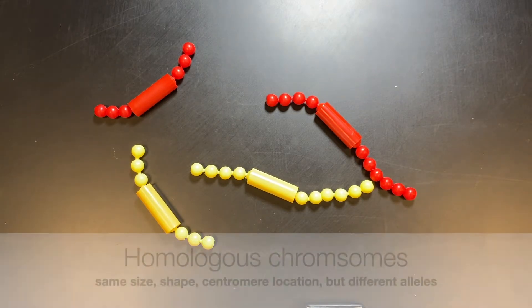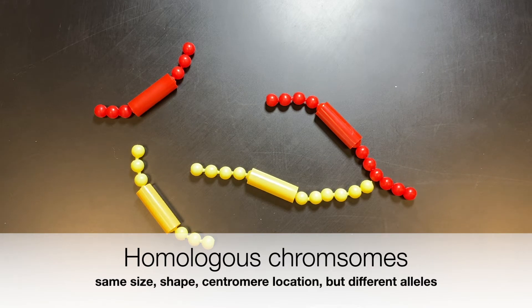I want to talk to you about the idea of homologous chromosomes. Homologous chromosomes are chromosomes that are about the same size and shape, but they might have different versions, different slightly versions of the genes.